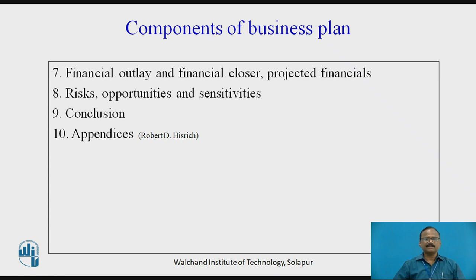Seven is Financial Outlays and Financial Closures: projected financials giving a gist of profit and loss, cash flow statement, breakeven point, risk which impacts your business, opportunities and sensitivities, and the parameters on which your business depends — like if cost and selling price varies. Conclusion: it should be a winning proposition. Appendices include detailed profit and loss account, balance sheet, cash flow statement, detailed project cost, market survey report, and other reports.